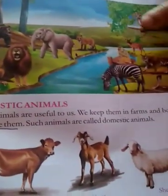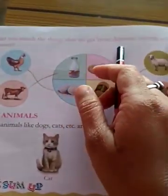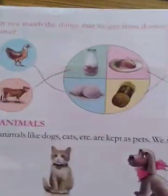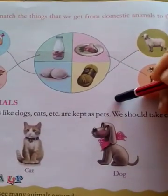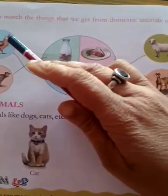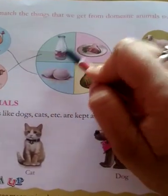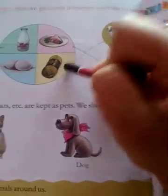Next, turn the page. Can you match the things that we get from the domestic animals to their sources? Here animals are there. What we will get from domestic animals — hen gives us eggs, cow gives us milk, goat gives us meat, and sheep gives us wool.